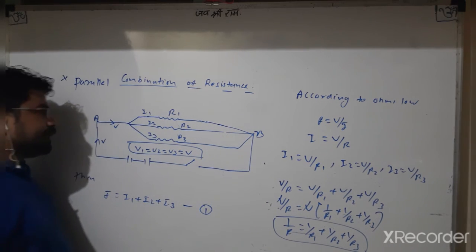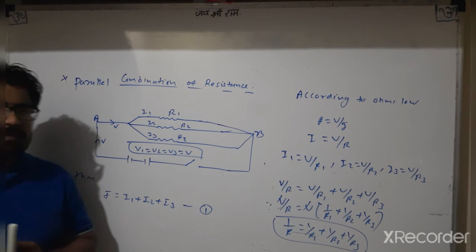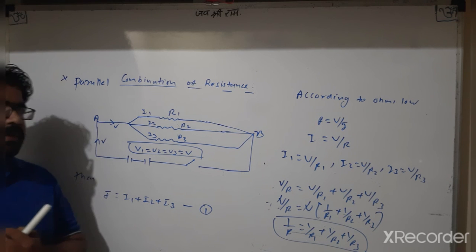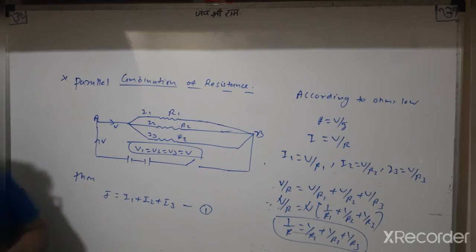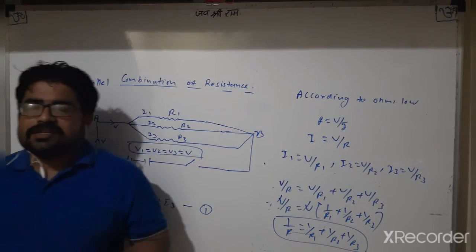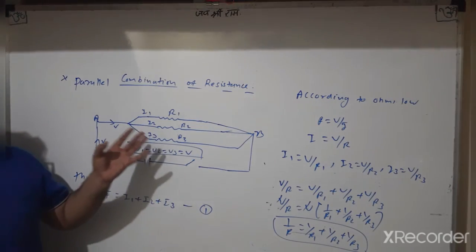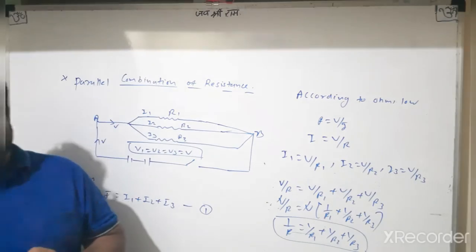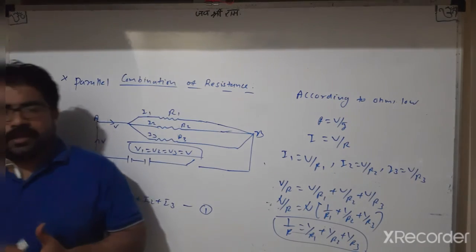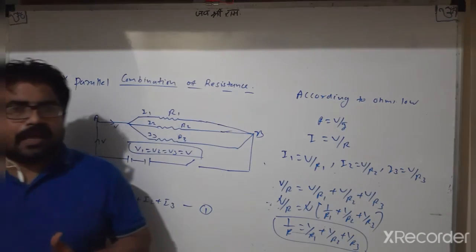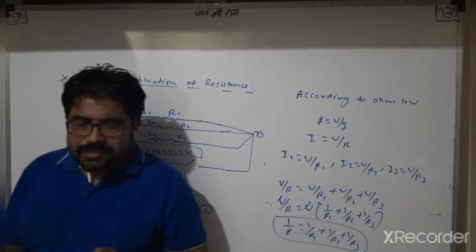In parallel combination, if you cut one branch — for example, the I2 branch — current will stop in that branch but the rest of the circuit will not be disturbed. If anyone has any query or question about series combination or parallel combination of resistance, ask in the comment box. This chapter is very useful for 12th science physics and also standard 10th. In the next lecture, we will show some examples for parallel and series combination of resistance. Have a nice day.